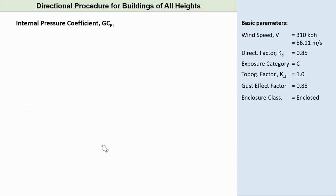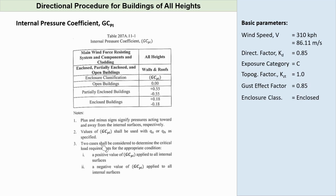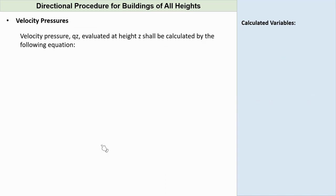Internal pressure coefficient. The value of GCPI depends on the building enclosure. Using Table 207A.11-1, we can get GCPI for enclosed buildings to be plus and minus 0.18. The plus and minus signs signify pressure acting toward and away from the internal surfaces respectively. Two cases shall be considered to determine the critical load requirements since we have two values of GCPI. Now that we have completed the basic parameters, we can now proceed to our manual calculation.